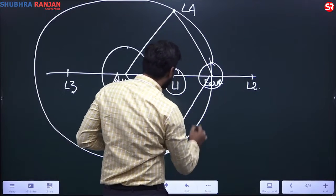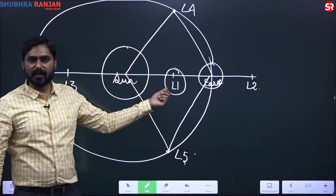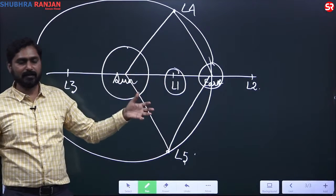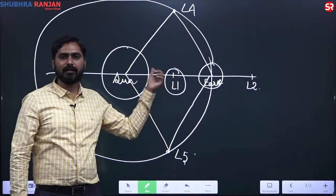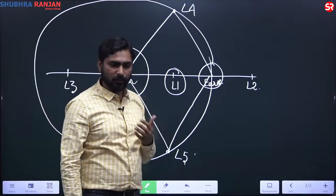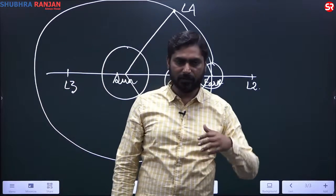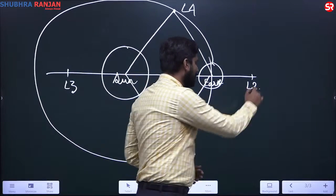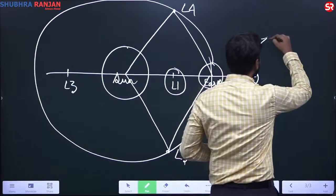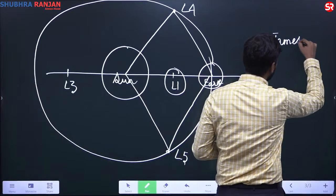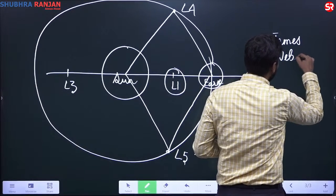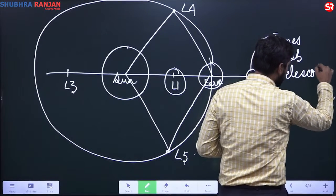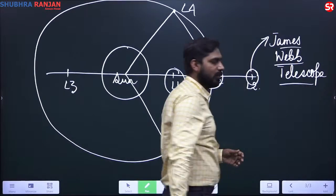So these are the Lagrangian points, and the Aditya mission is being placed at L1. The advantage of placing Aditya there is that it will get an uninterrupted view of the sun, and less fuel is required because it is a stable point. L2 is also an important point — we have sent the James Webb telescope there, which will look deep into space.